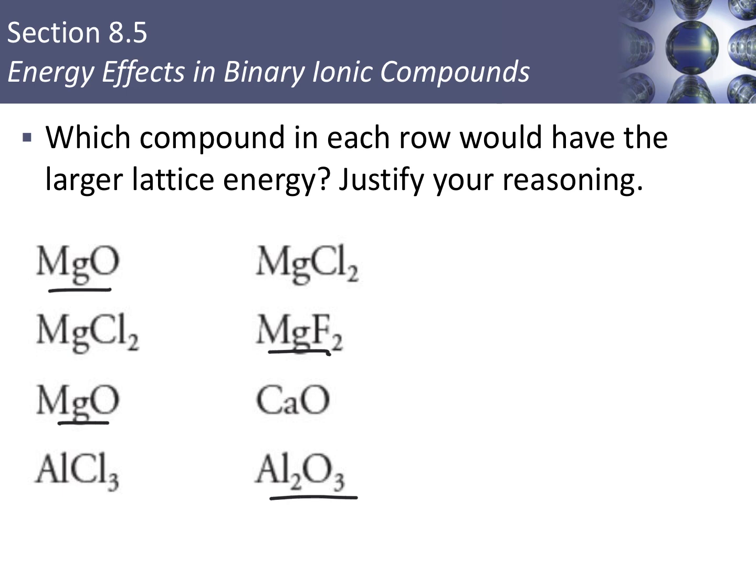For aluminum chloride versus aluminum oxide, aluminum oxide has the higher charges — +3 and −2 — compared to +3 and −1 for the chloride. So there is a stronger force of attraction in aluminum oxide, giving it a larger lattice energy.